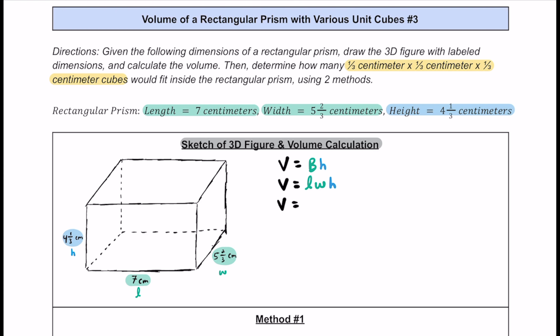Making substitutions, the volume equals the length of seven centimeters, multiplied by the width. I'll convert five and two-thirds to an improper fraction now: that's 17 thirds. Then multiply by the height, which as an improper fraction is 13 thirds. We can also write seven as seven over one, so we're multiplying 7/1 × 17/3 × 13/3.